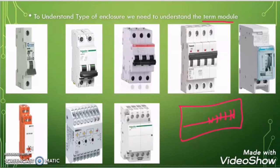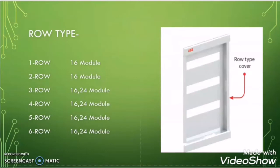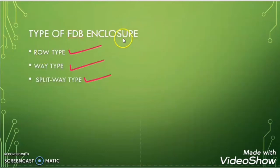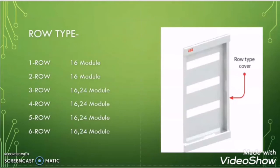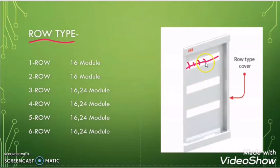Now let us move further to our topic — the types of enclosures for the final distribution board based on the breaker arrangement: row type, way type, and split way type. Let us discuss about the row type. If the breakers are arranged in a row pattern, then that enclosure will be called row type.